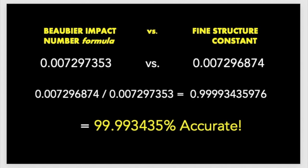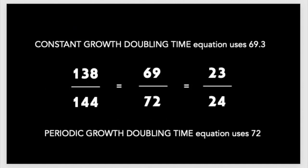If you guys don't think that's impressive or important, that's fine, but I'll show you why I think that the 144 integrated into the fine structure constant is important, because it shows up in so many places, in so many realms. What's important to realize is that half of 138 over 144 is 69 over 72, and the constant growth doubling time equation uses 69.3, and periodic growth doubling time uses 72.